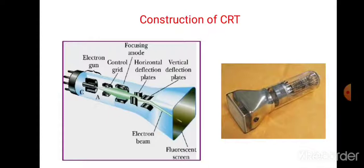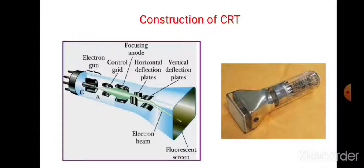Before going to the construction part — what do you mean by a cathode ray tube? The cathode ray tube is a vacuum tube containing an electron gun. Electron gun is a source of electrons — it is not a gun, it is nothing but a source of electrons. The cathode ray tube contains a fluorescent screen with an internal or external accelerated electron beam.